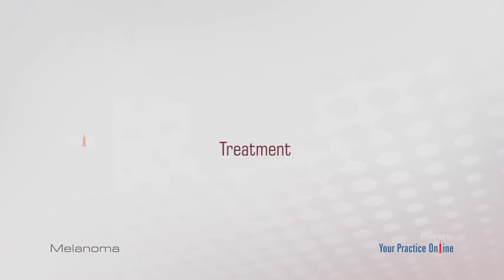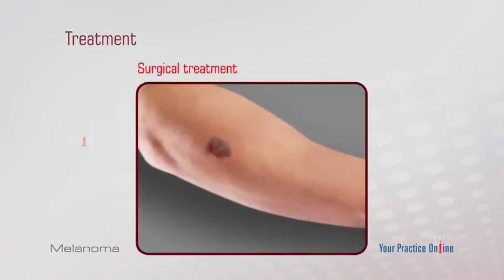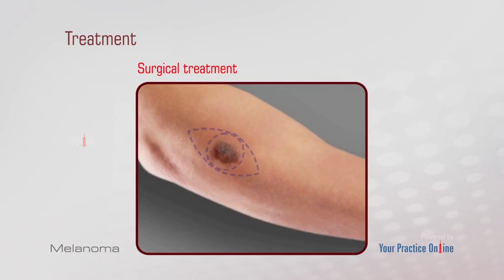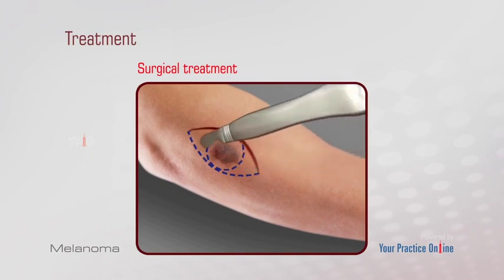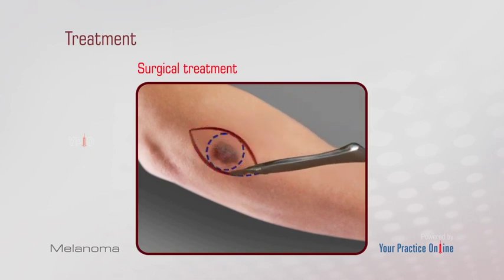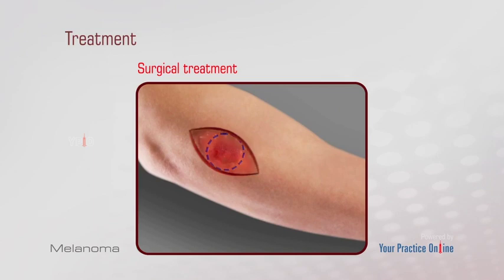Treatment will depend on the stage of cancer, size and location of the tumor, and the patient's general health. Surgical treatment is the standard treatment for melanoma. Wide surgical excision is done for removal of the tumor along with the surrounding normal skin, depending on the depth of the melanoma.